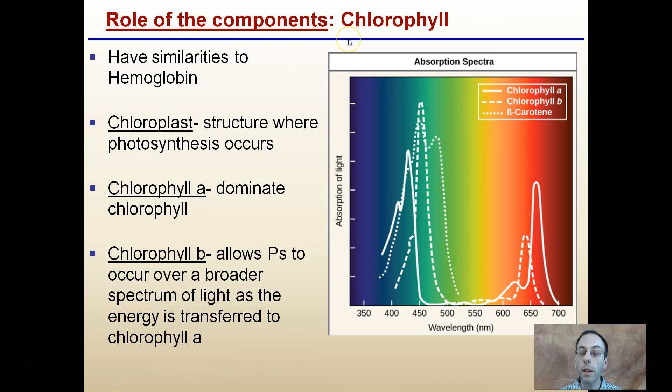So what does that actually look like? This is one of the graphs and charts that would look like here. So our chlorophyll - again, this is the site where all this is occurring. It's a very important component. It has properties similar to hemoglobin in our own bodies. Chloroplast structures are where this is actually occurring, and there's different types of chlorophyll.